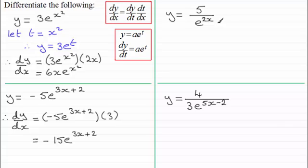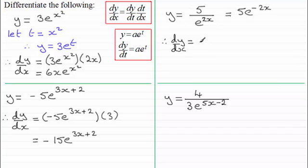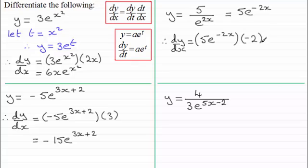For this example, remember at the start of the video I showed this could be written as 5e to the power minus 2x, so t is minus 2x. For dy by dx: differentiating 5e to the power t gives back 5e to the power t, but t is minus 2x. Multiplying by dt by dx — differentiating minus 2x with respect to x gives minus 2. So we end up with minus 10e to the power minus 2x, or equivalently minus 10 over e to the power 2x.